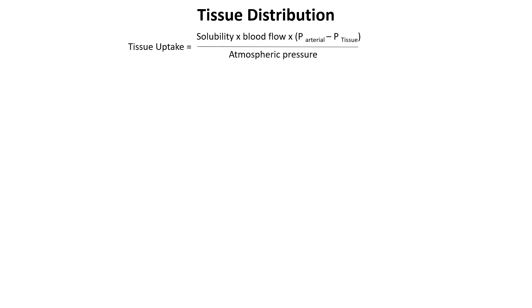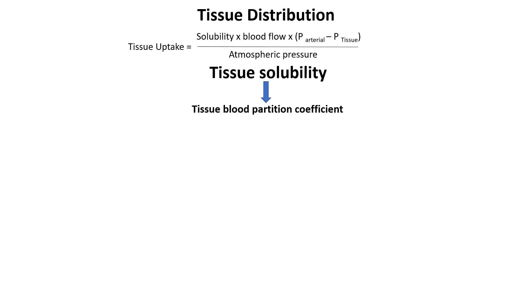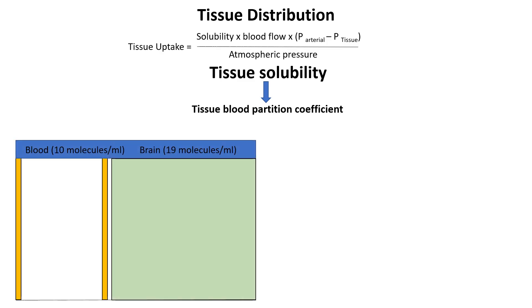Tissue distribution is influenced by several factors including the solubility of the anesthetic in blood and tissues, blood flow to the tissues, and arterial concentration or partial pressure. Solubility of anesthetics in tissues is explained by the blood-tissue partition coefficient, just as the blood-gas partition coefficient determines uptake from alveoli into blood. The tissue-blood partition coefficient quantifies how much of an anesthetic is dissolved in tissues like the brain relative to blood at equilibrium. A higher coefficient means the anesthetic is more soluble in tissues, so for a given partial pressure, the concentration in the tissues will be higher compared to arterial blood.